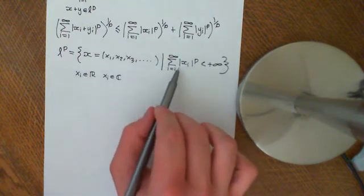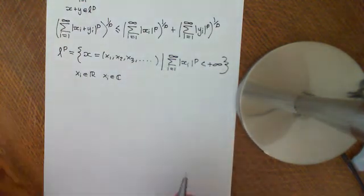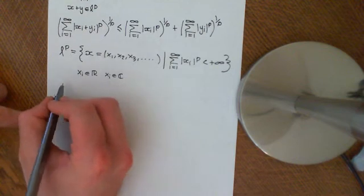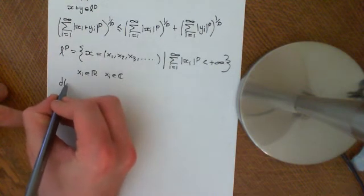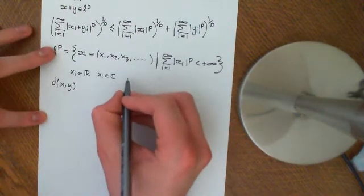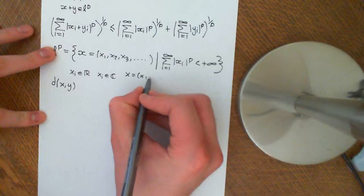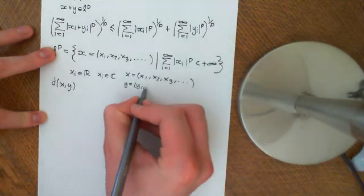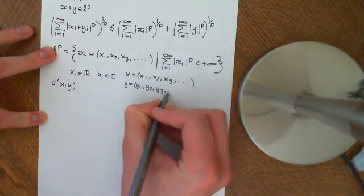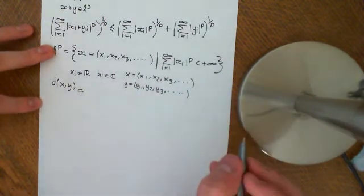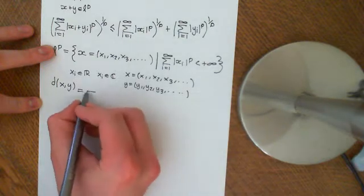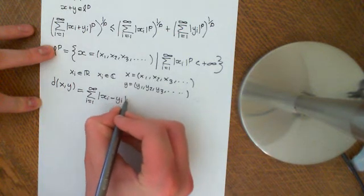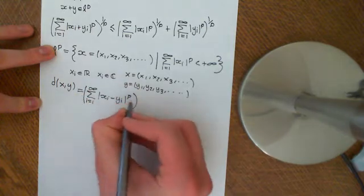So it consists of all sequences for which this sum is finite, with elements in the real or complex numbers. We define the metric — the distance function between a sequence x and a sequence y, where x = (x1, x2, x3, ...) and y = (y1, y2, y3, ...) — to be equal to the summation from i equals 1 to infinity of the modulus of xi minus yi to the power of p, all raised to the power of 1 over p.